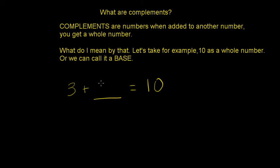So we know 3 plus 7, we get 10. So a complement of 3 is 7.